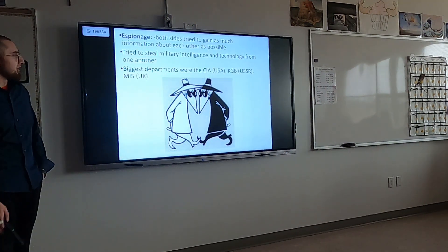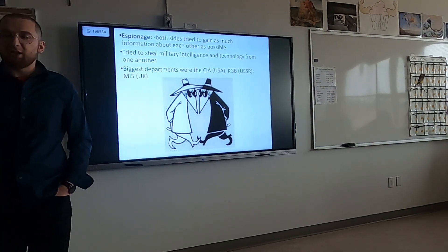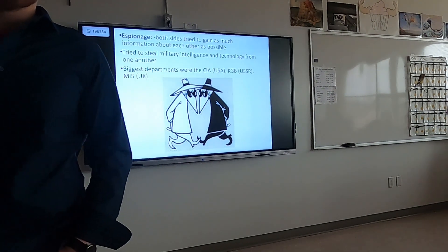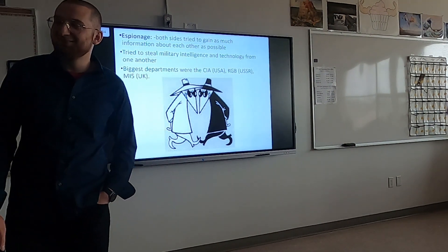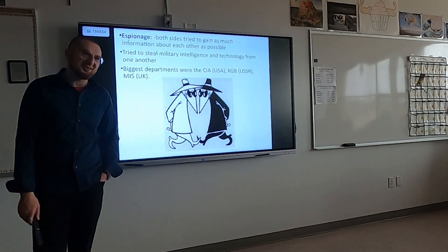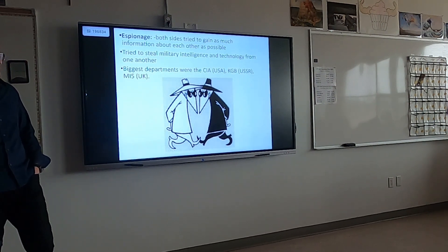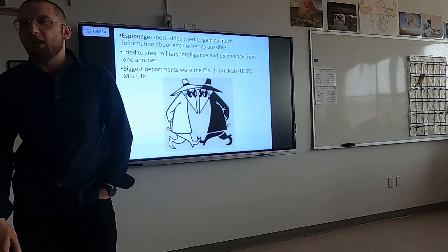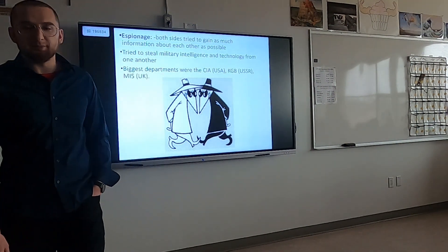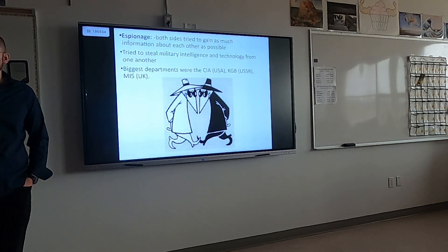Another term: espionage — which means spying. There was a lot of spying that went on during the Cold War as both sides were always trying to gain intelligence and gain secrets. There are a lot of movies based around that. The three main spy agencies were the CIA for the USA, the KGB for the Soviets, and MI5 for Britain.